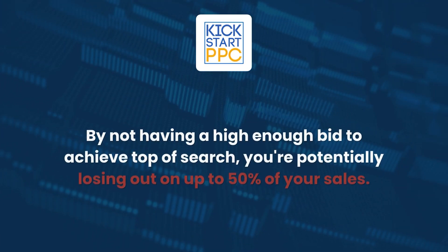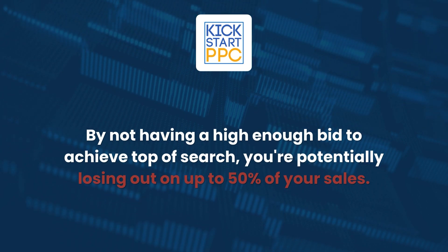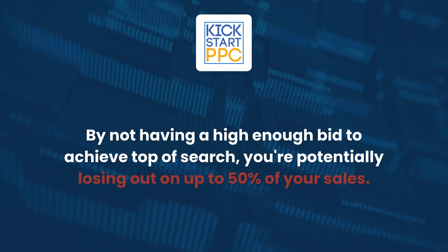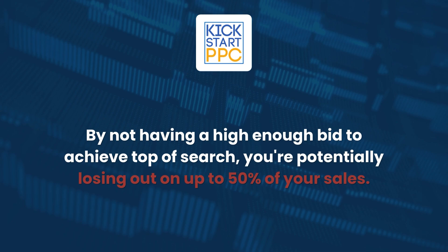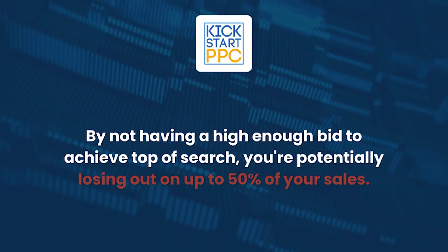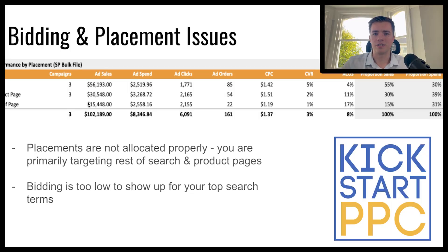By not optimizing your bids regularly and staying at the top of search — making sure you're dominating those placements — you're potentially losing out on 50% of the sales you could be getting, because product pages and rest of search will only get you so many sales. As you can see here, they're only 45% of total sales. So by increasing to top of search, you can start dominating those placements.